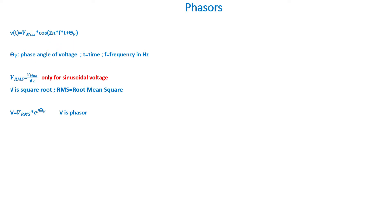We can write the voltage in exponential format as the RMS value of the voltage times e to the power of jθ. We can also write it in polar format as the RMS value of the voltage at the angle of the voltage. In rectangular form, it is the RMS voltage times cosine(2πft + θ_v) plus j times the RMS voltage times sine of the quantity 2πft + θ_v.